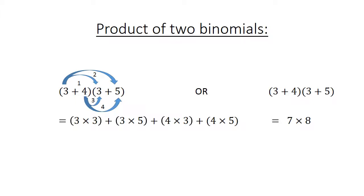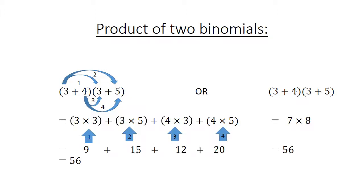If they are like terms, we can say 3 plus 4 equals 7, multiplied by 3 plus 5 equals 8, giving 56. Step by step: step 1, step 2, step 3, step 4 — we simplify 9 plus 15 plus 12 plus 20 equals 56.